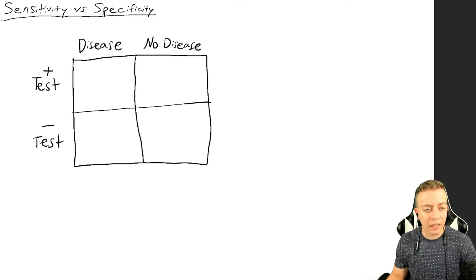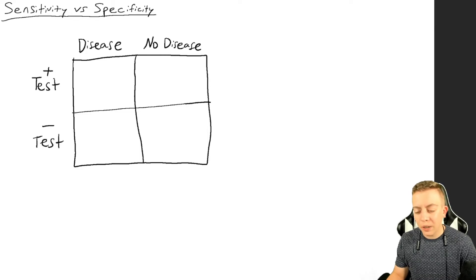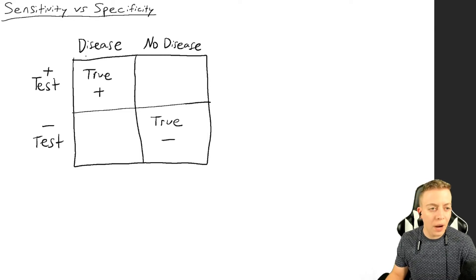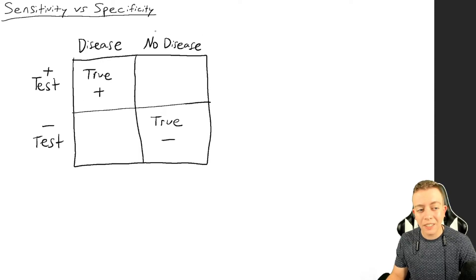Looking at our screen, we have a little 2x2 chart. We have disease on the left side, no disease on the right side, positive tests up on the top and negative tests on the bottom. If we have somebody who has the disease and they test positive, they would be a true positive. But if someone does not have the disease and they test negative, they would be a true negative.